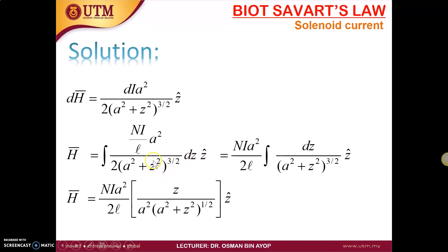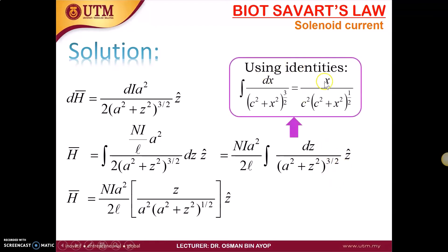We have Ni a squared divided by 2l, integration of dz divided by (a squared plus z squared) to the power of 3/2, in the direction of z. You have to use the identity. This is our solution.